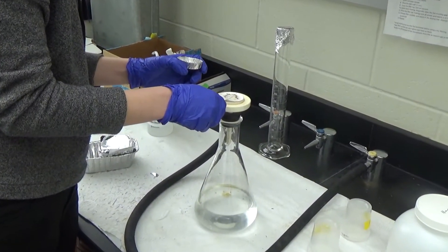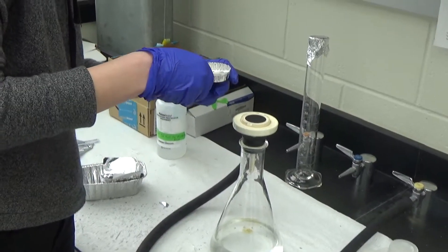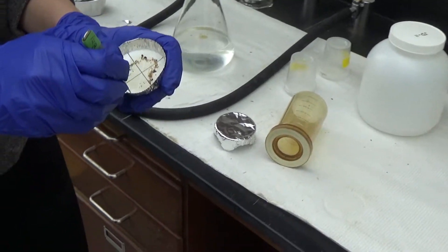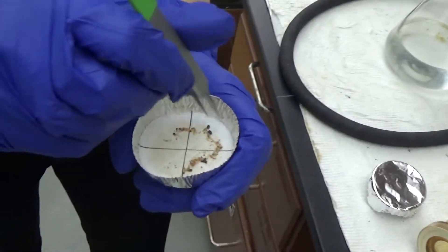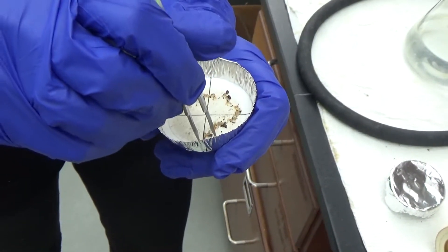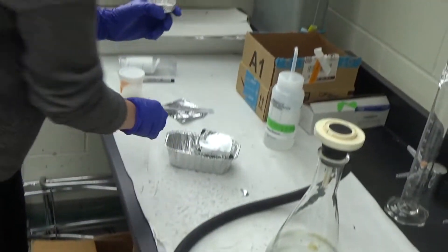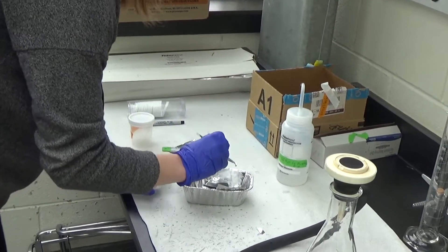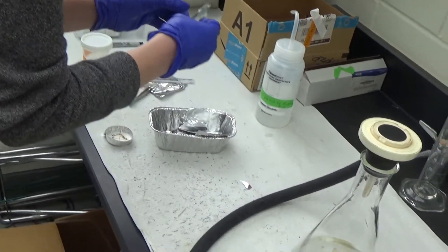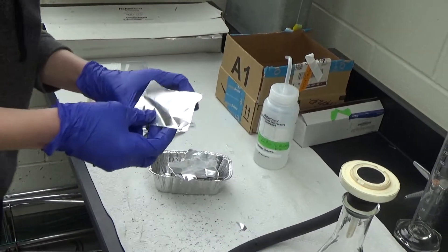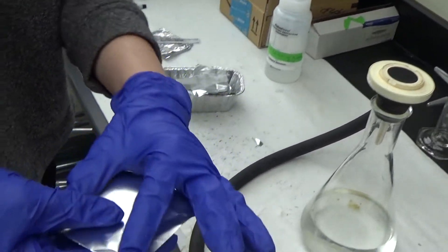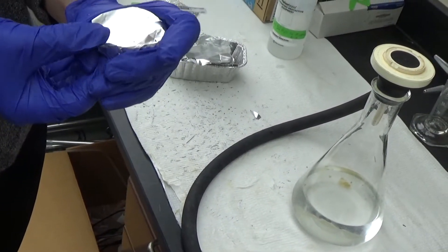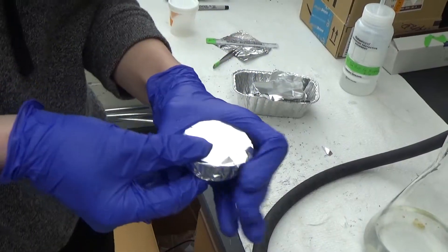Using your forceps, remove the filter from the filter stand and place it in an aluminum weigh boat that's already been labeled. Be sure to push the edges of the filter down to make it even. This makes it easier for when you're counting the microplastics under a microscope. Cover your sample with a piece of aluminum foil. Allow your sample to dry for at least 24 hours before moving on to counting.